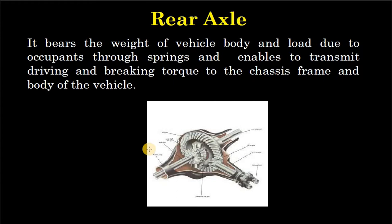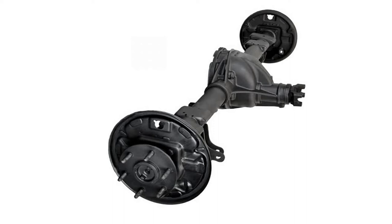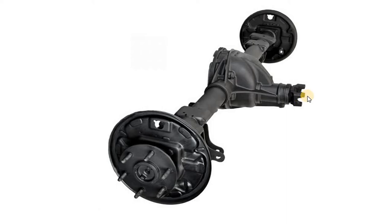अब जो हमारा rear axle है वो कैसा दिखता है — यह हमारा rear axle है, मतलब पीछे वाला axle। यहाँ पर हमारा differential लगा है, differential के बाद दोनों axle लगे हैं जो 90 degree पर दोनों तरफ wheels में power को भेजता है। यहाँ से हमारी propeller shaft लगी होती है, universal joint के साथ जोड़कर।